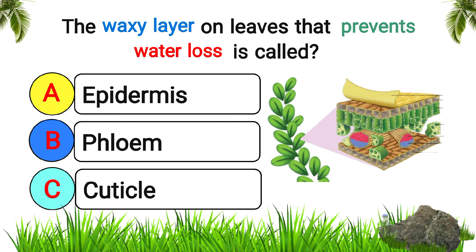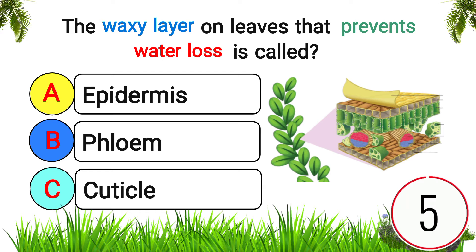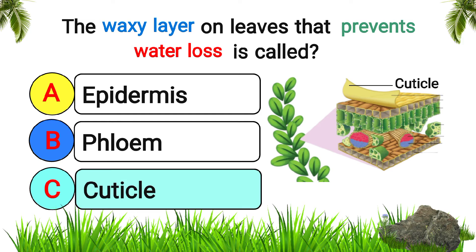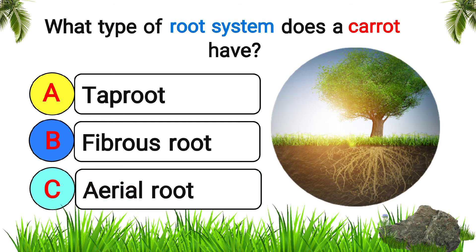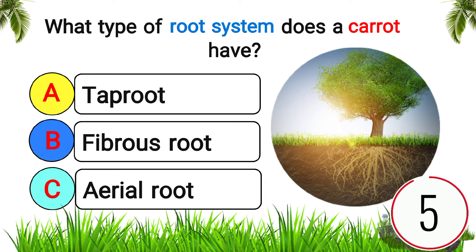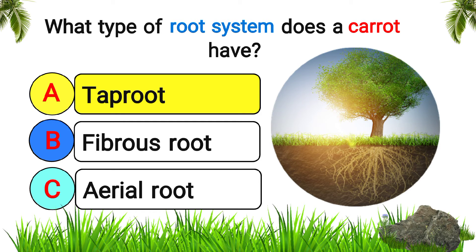The waxy layer on leaves that prevents water loss is called? Answer: cuticle. What type of root system does a carrot have? Answer: taproot.